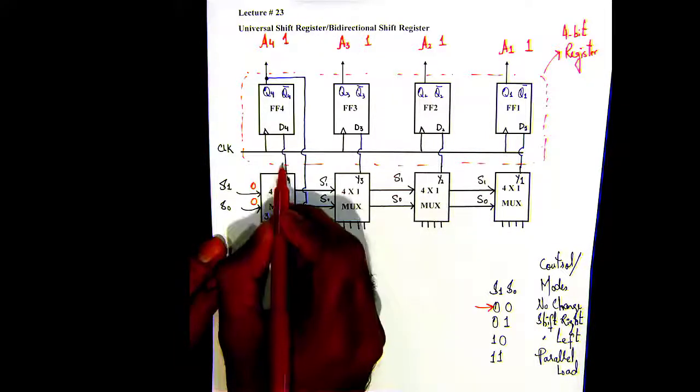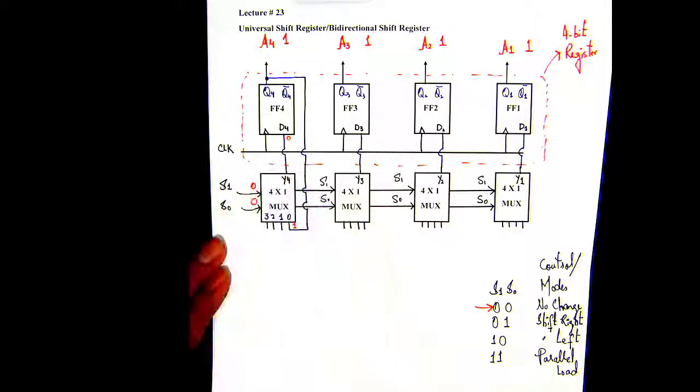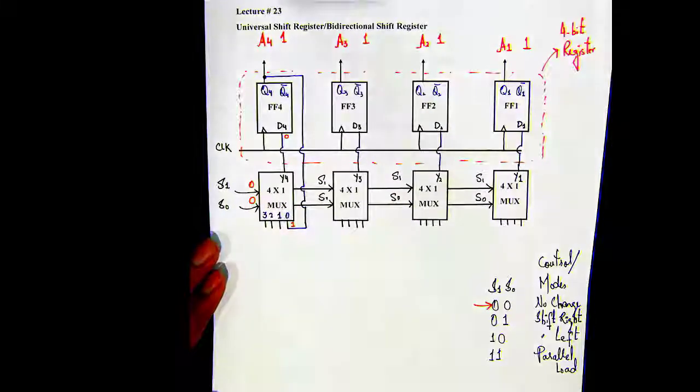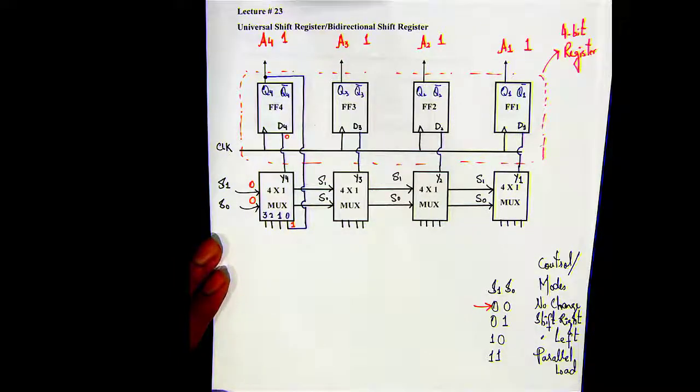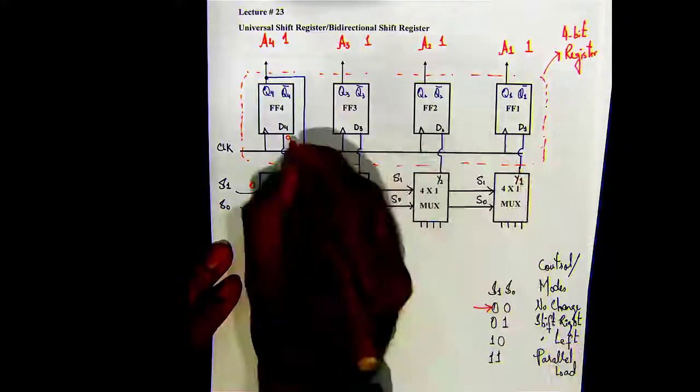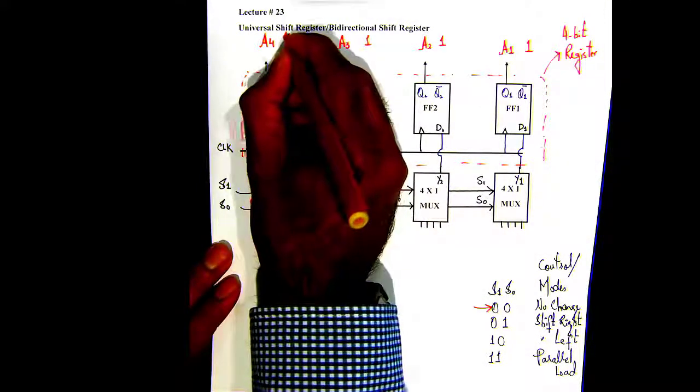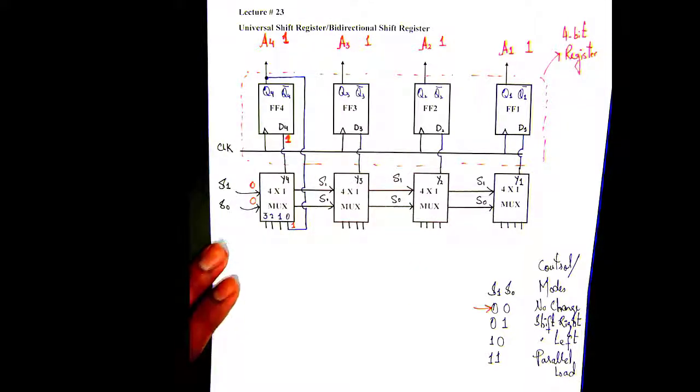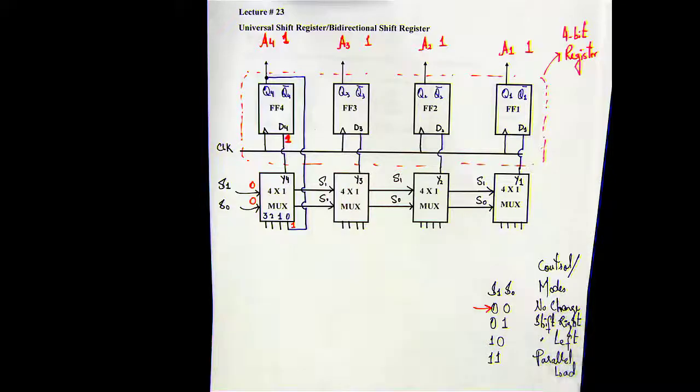Therefore I have wired A4 to zero, and because this is one, so that means I'm getting one here, correct, because the selectors are just set to zero zero. Whatever we have at line zero will go past the mux, so I get one here. Whenever the clock arrives, the property of a D flip-flop is the next state will be equal to whatever D is. Because D is one here, the output will be one, Q4 will be one, correct. So there's no change.